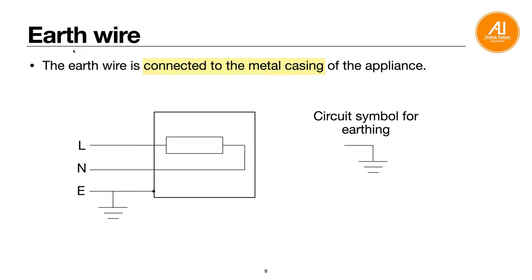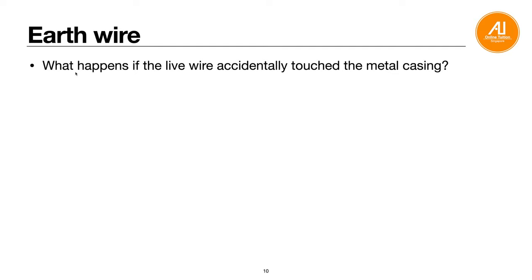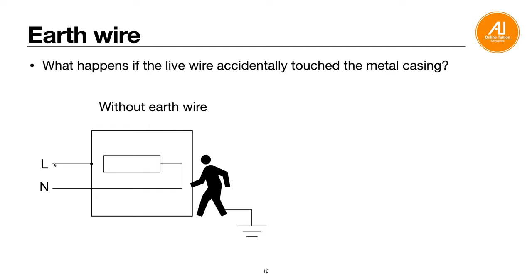Next, earth wire - another safety feature. The earth wire is always connected to the metal casing of the appliance. Normally, current flows in from the live wire, through the heater or resistor, and out through the neutral wire. But if the live wire accidentally touches the metal casing, the metal casing becomes live. Without an earth wire, if the user touches the metal casing, the current flows through the user into the ground, causing an electric shock.